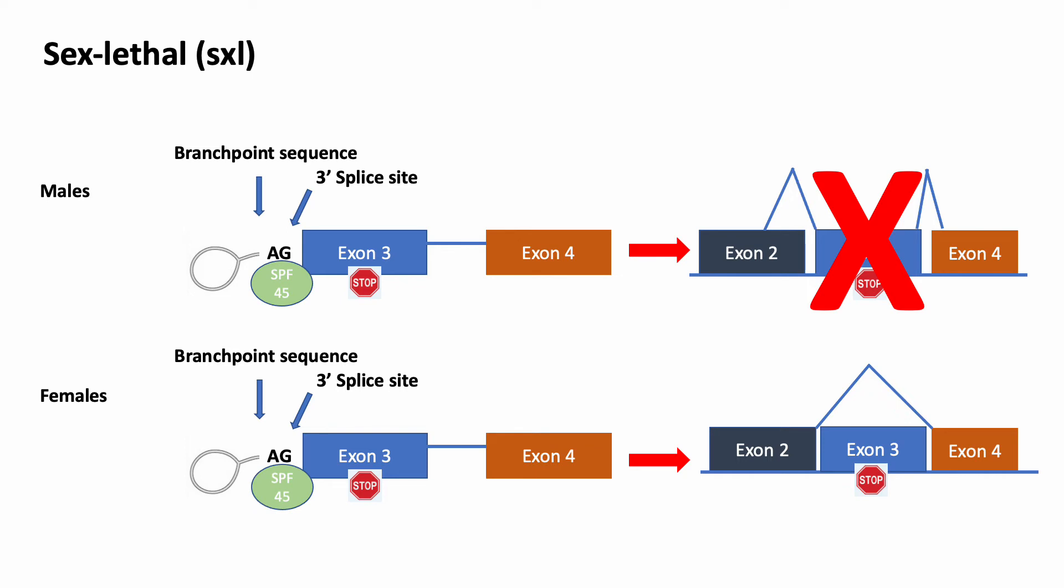In males, this promotes the inclusion of the third exon with its premature stop codon, and then creates a non-functioning RNA molecule. In the females, sex-lethal binds to the polypyrimidine tract ahead of the splice site. It then interacts with SPF4-5 and activating it. This leads to the exclusion of the third exon and the production of a functioning RNA molecule.